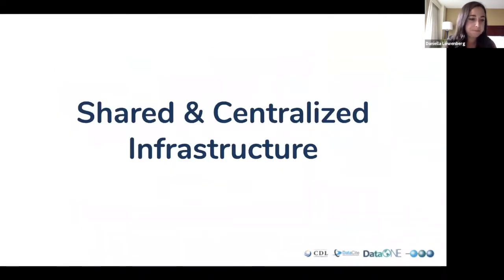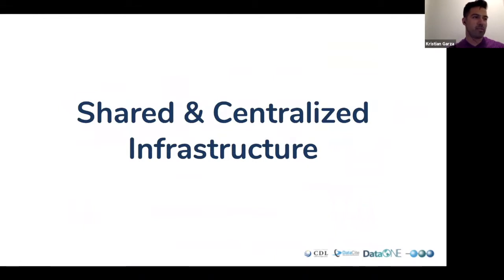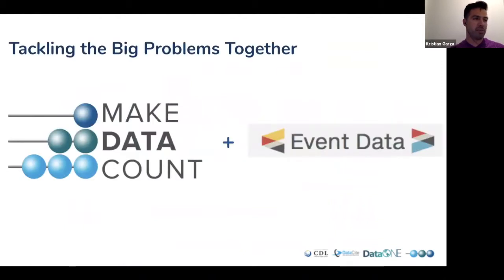Thank you, Danielle. A core part of the Make Data Count project is to provide shared infrastructure to publish data usage and citations. The main component of that shared infrastructure is the EventData service — a service between DataCite and Crossref that provides connections between persistent identifiers and other resources, with an initial focus on social media and mentions in data citations. In the Make Data Count project, we expect data repositories to use EventData to both report usage to a centralized open place and also consume data usage and citations.